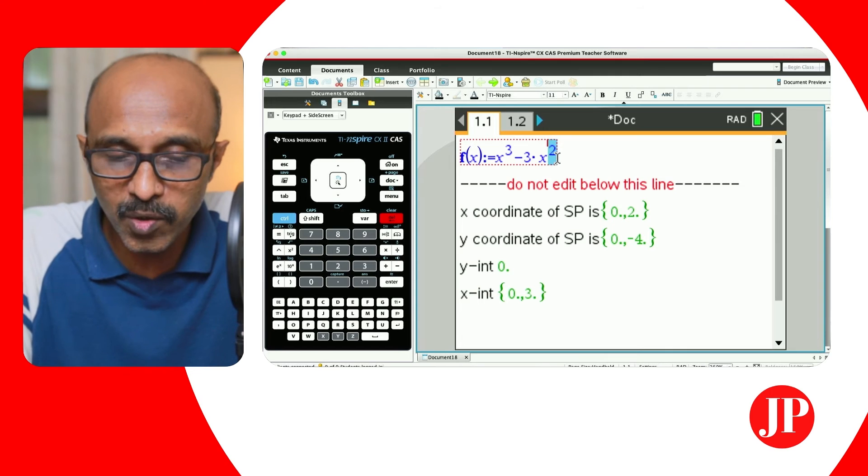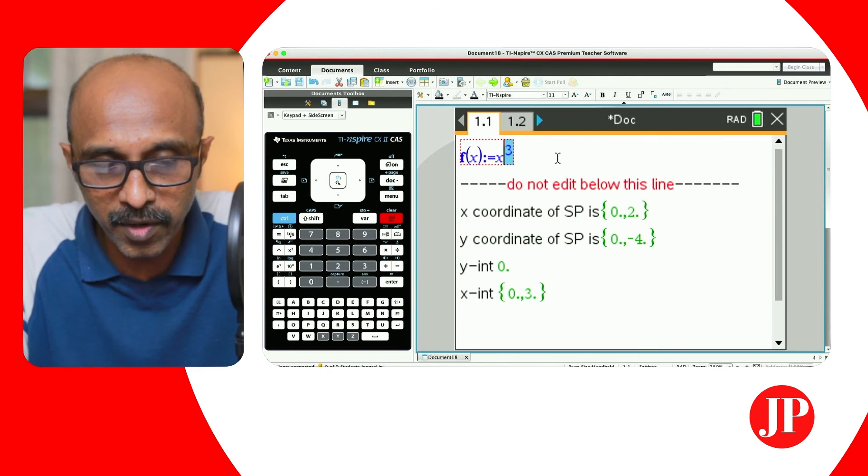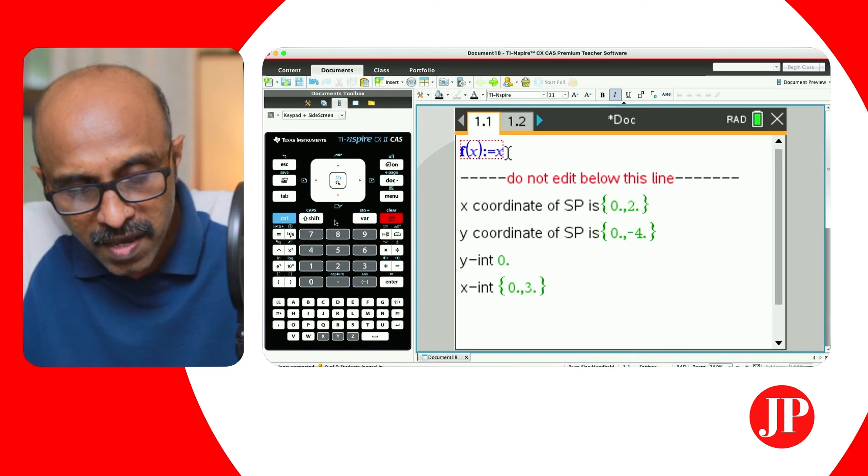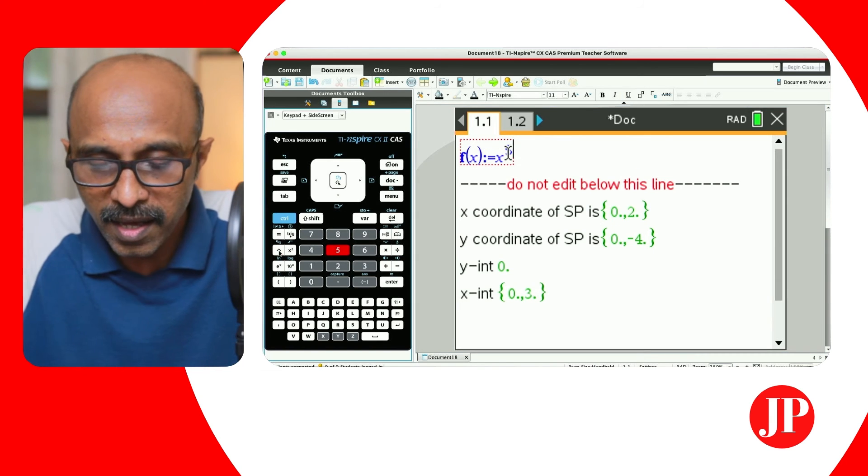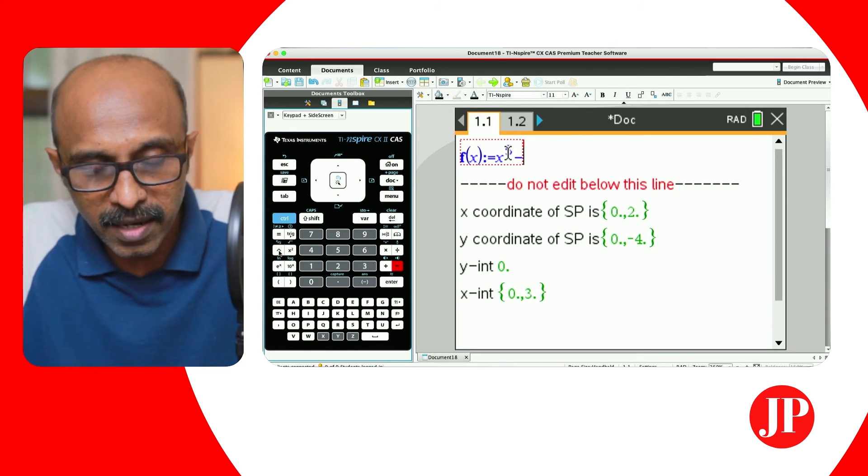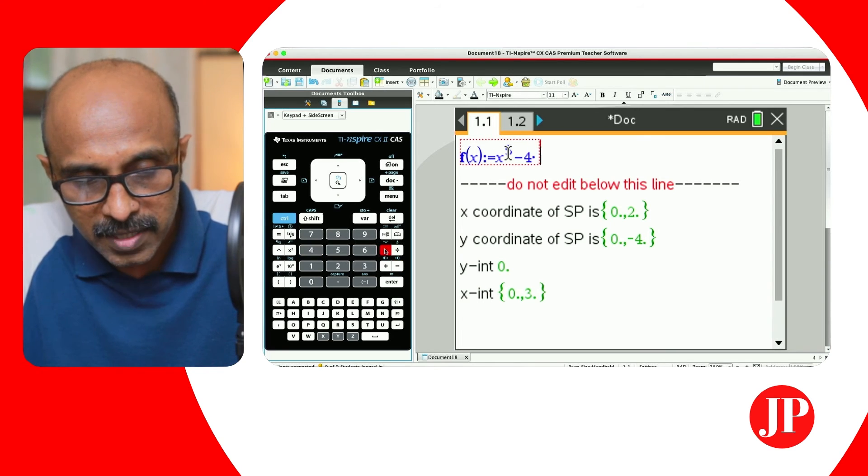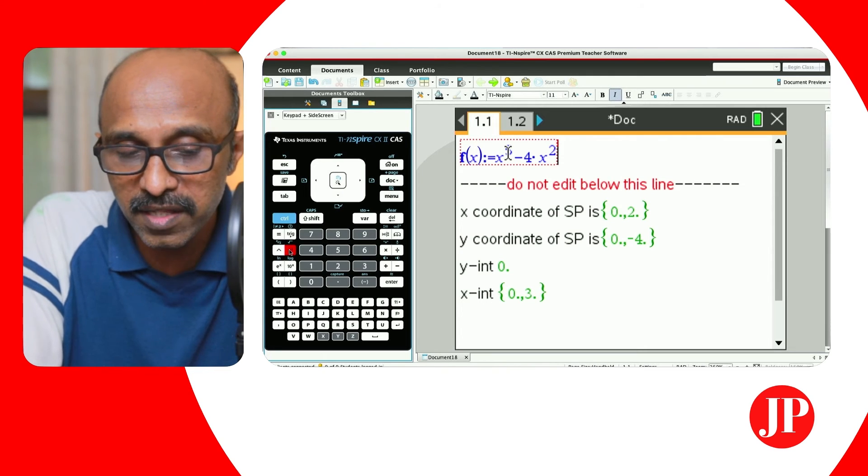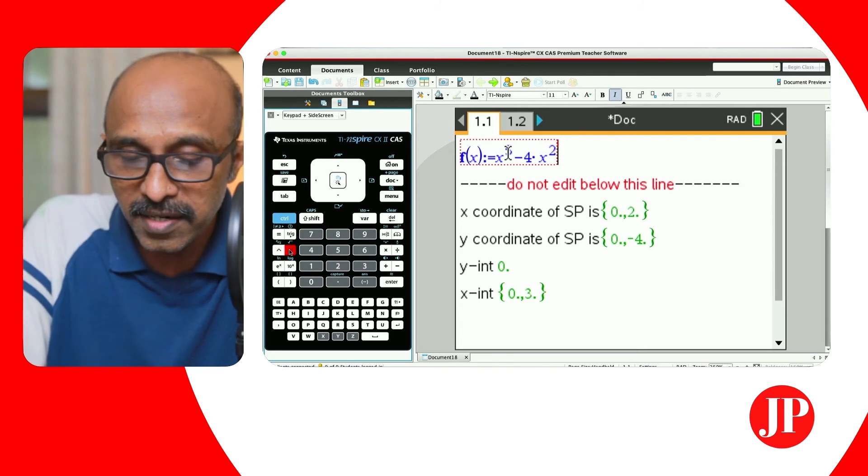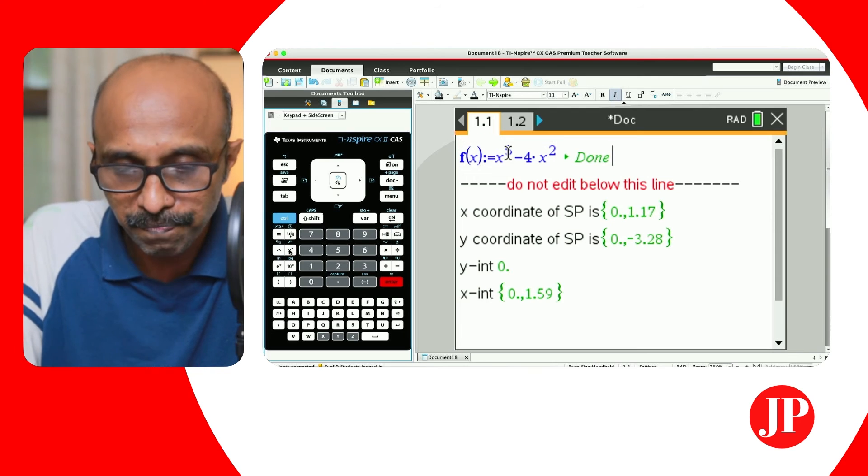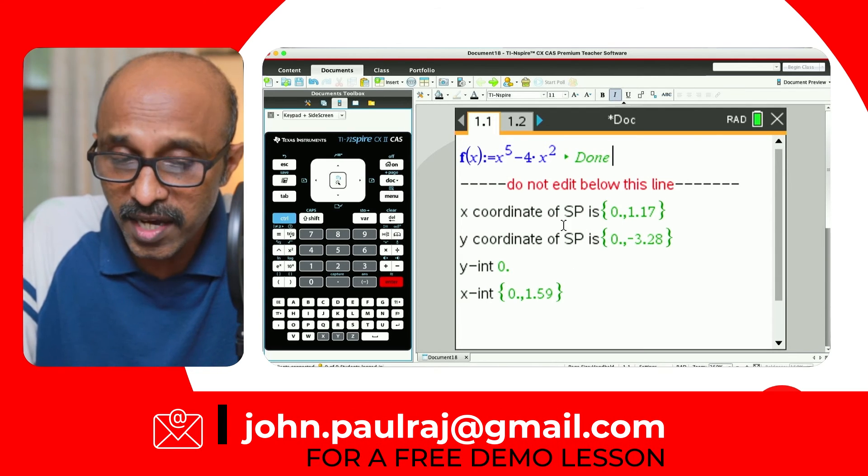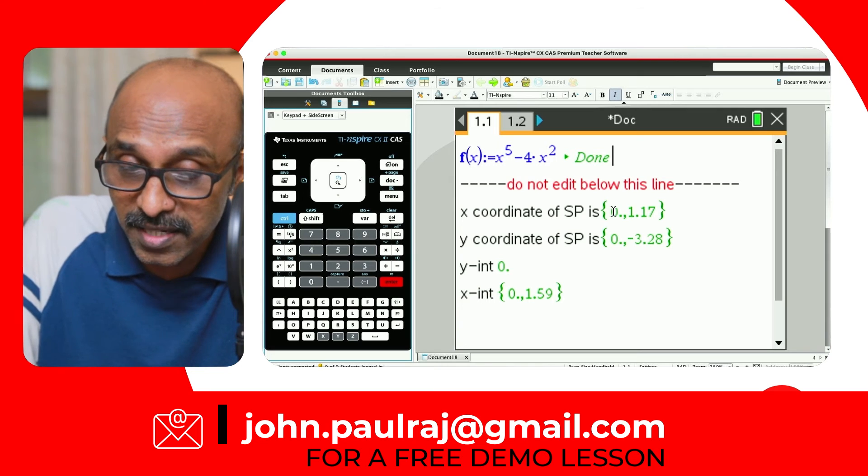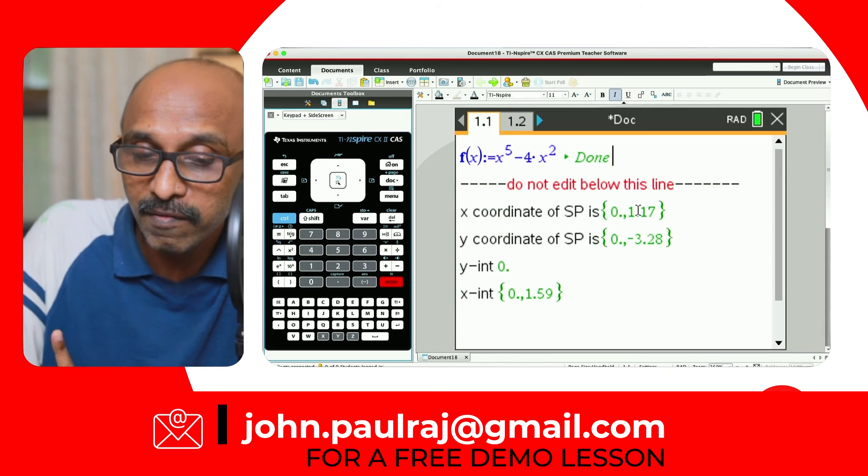Let's go and make those changes. Let's say you wanted this time for a polynomial of degree five. Let's just make it something like x^5 - 4x^2. We just updated it. Whatever function you're trying to find the coordinates of the stationary point for, you can enter there. And when you hit enter, watch, there you go, automatically it's updated the x coordinates of the stationary point.